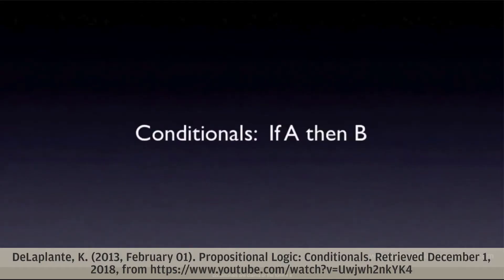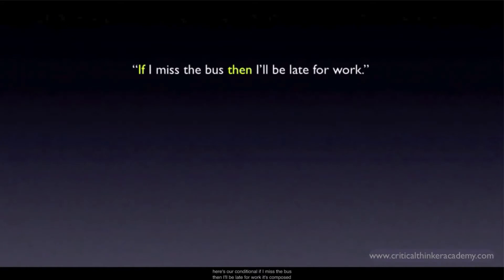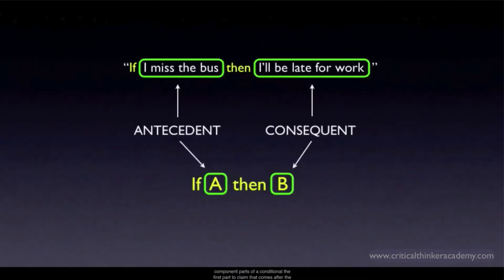Conditionals are claims of the form 'if A is true, then B is true.' Here's a conditional: if I miss the bus, then I'll be late for work. It's composed of two separate claims: 'I miss the bus' and 'I'll be late for work.' The conditional claim is telling us that if the first claim is true, then the second claim is also true. The first part — the claim that comes after the 'if' — is called the antecedent. The second part — the claim that comes after the 'then' — is called the consequent.